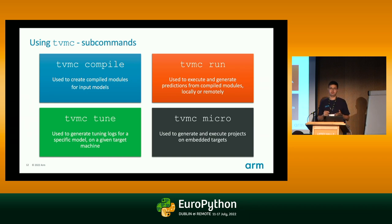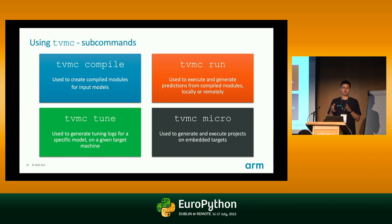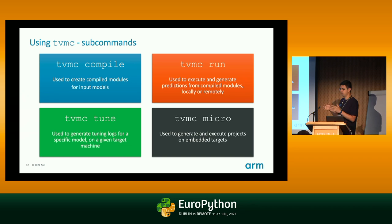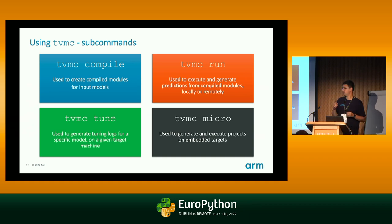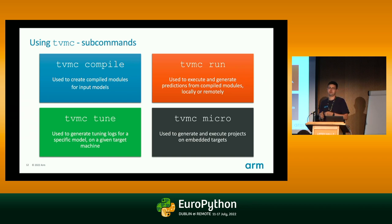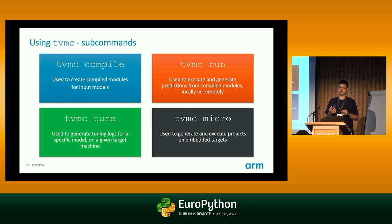TVMC tune allows you to try many versions of the model with different compiler optimizations to see which one gets performance improvements on your machine, then gives you a report of what it found and which runs best on the specific target you asked. TVMC run allows you to execute a compiled model — you compile the model, generate a package, and then run it to generate predictions. If your model is for image recognition, you can use TVMC run to collect the outputs from that model.